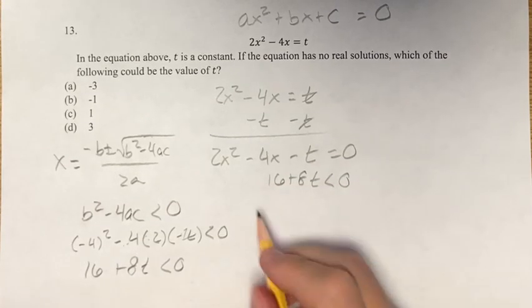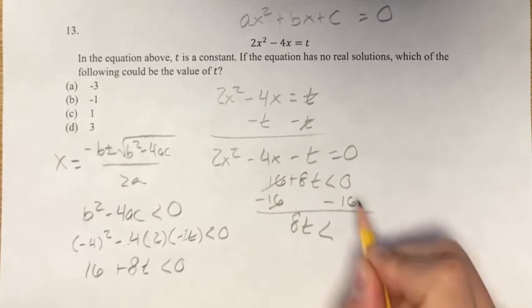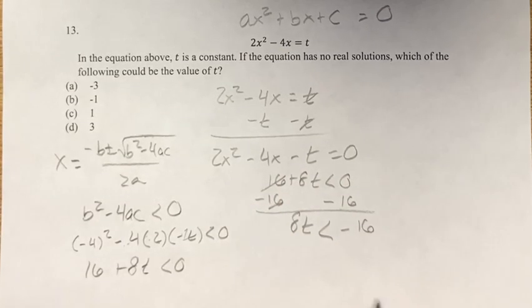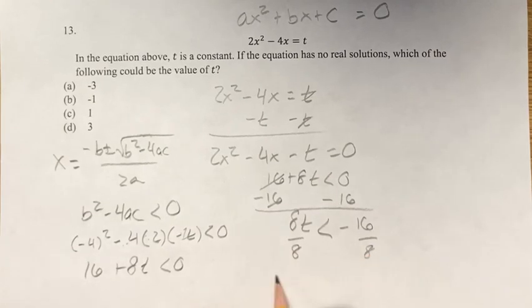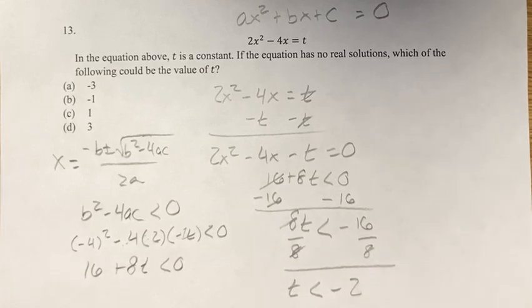just rewriting it up here so you don't run out of space. Subtract 16 on both sides to solve for t. We get 8t is less than 0 minus 16 is negative 16. Divide both sides by 8. We get t is less than negative 16 over 8. t is less than negative 2.